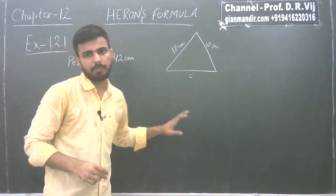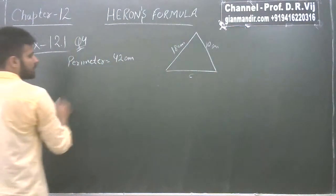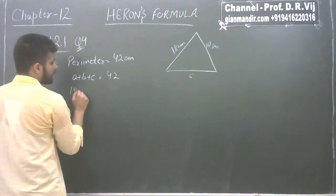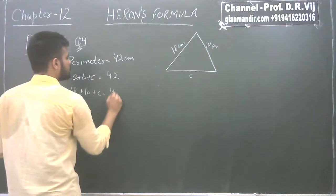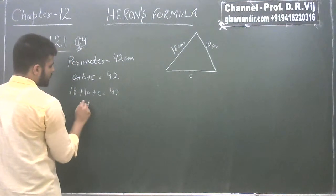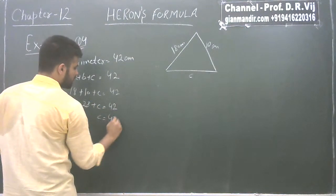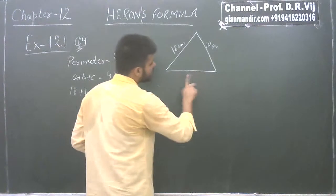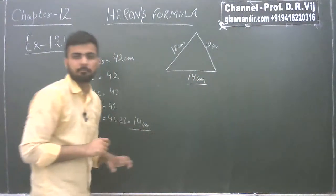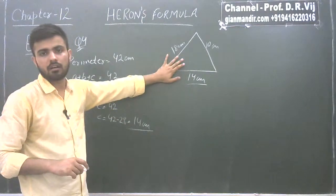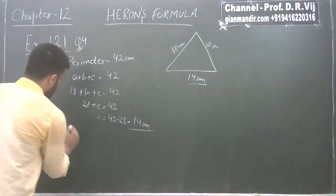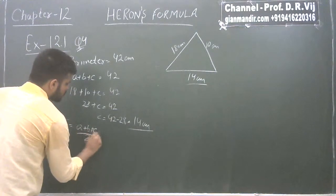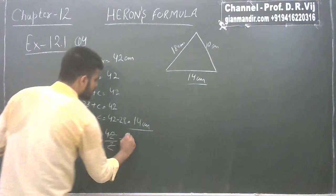We all know perimeter is the sum of all sides. We have two sides so we can easily find C. A + B + C = 42, so 18 + 10 + C = 42, giving 28 + C = 42, so C = 42 − 28 = 14 centimeter. Now, S = (A + B + C) / 2 = 42 / 2 = 21 centimeter.